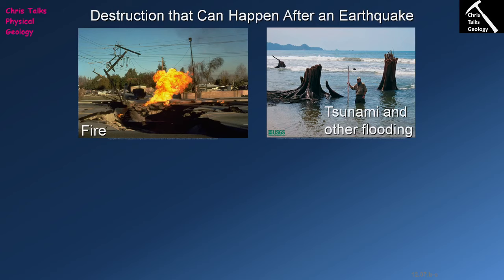When the normal fault moves, the ground level your house is on is going to drop down relative to its original position — the ground on which your house is built has subsided. If your house is located on the coast, all of a sudden the ground level is now below sea level, so the sea is going to flow onto the land and inundate your house — you're going to have flooding.